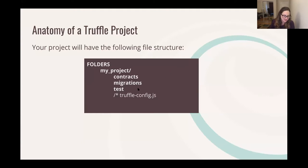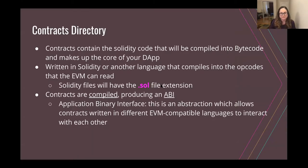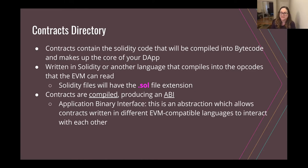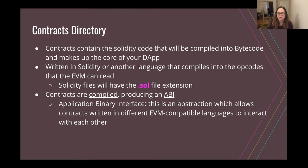Your project will have several directories. The contracts directory contains the Solidity code for the smart contracts that make up your dApp — this is where you put the actual logic for how your code interacts with the Ethereum virtual machine. A contract is a transactional program which is run and validated by the Ethereum network. In Solidity you would write a contract that might have getters and setters to interact with the Ethereum virtual machine.